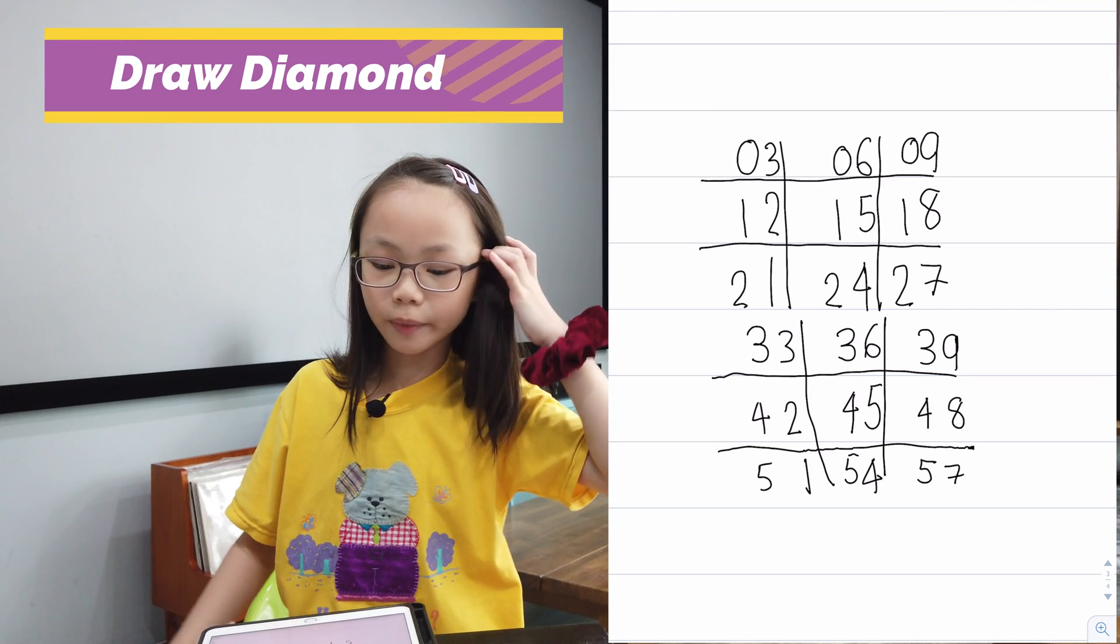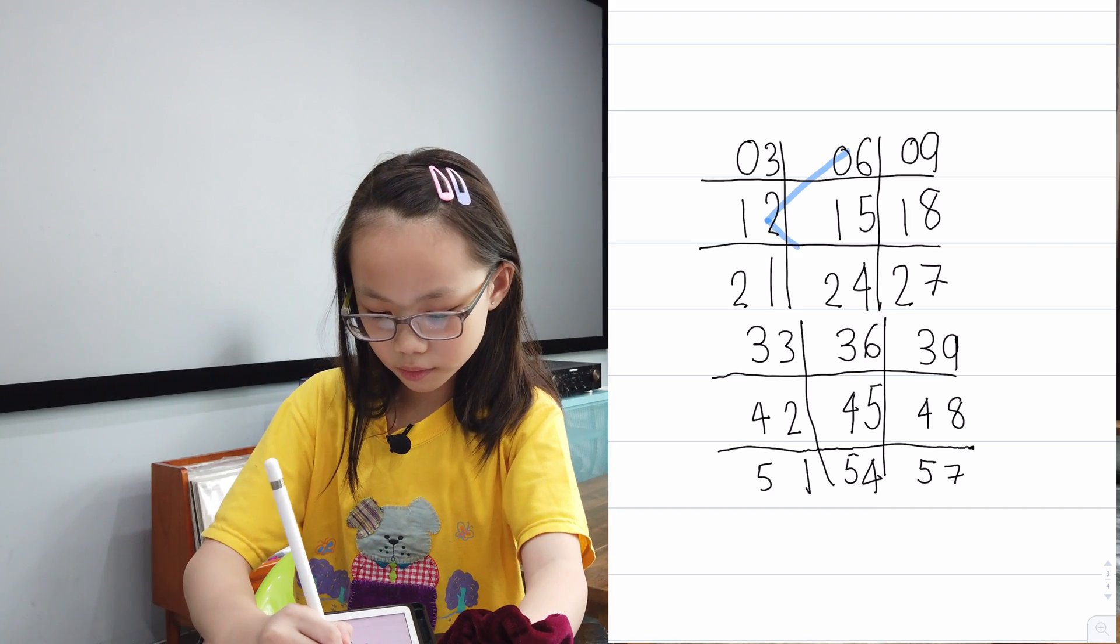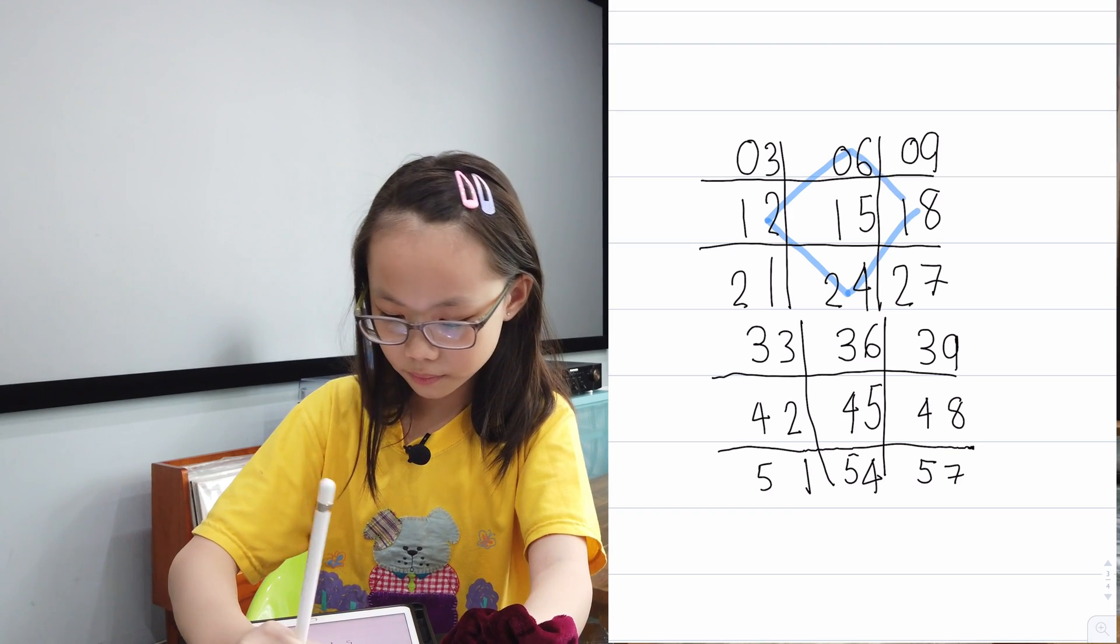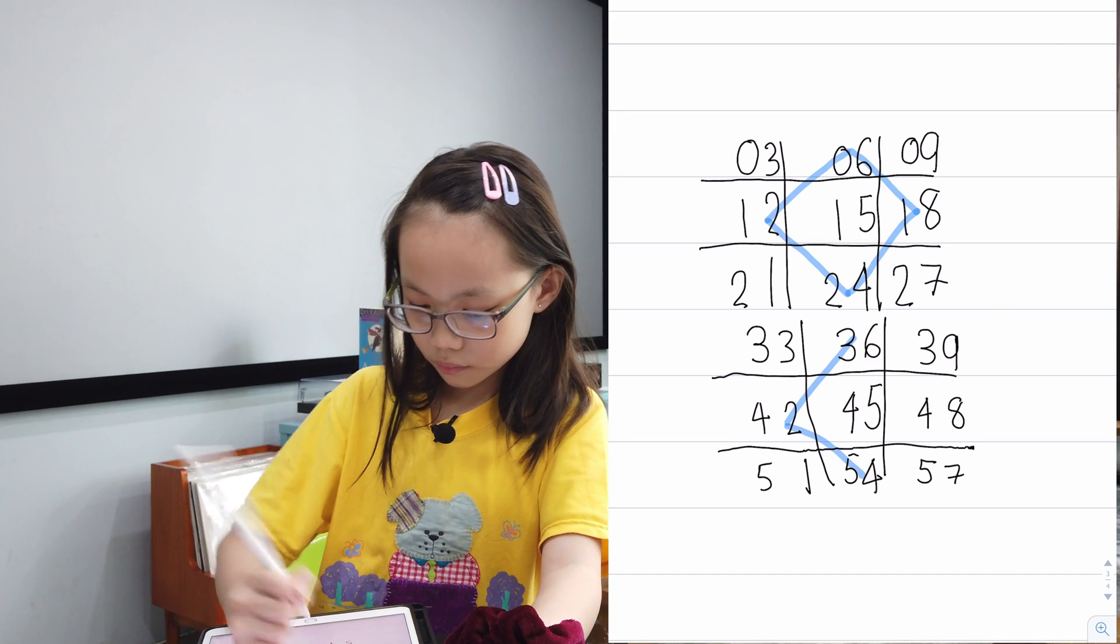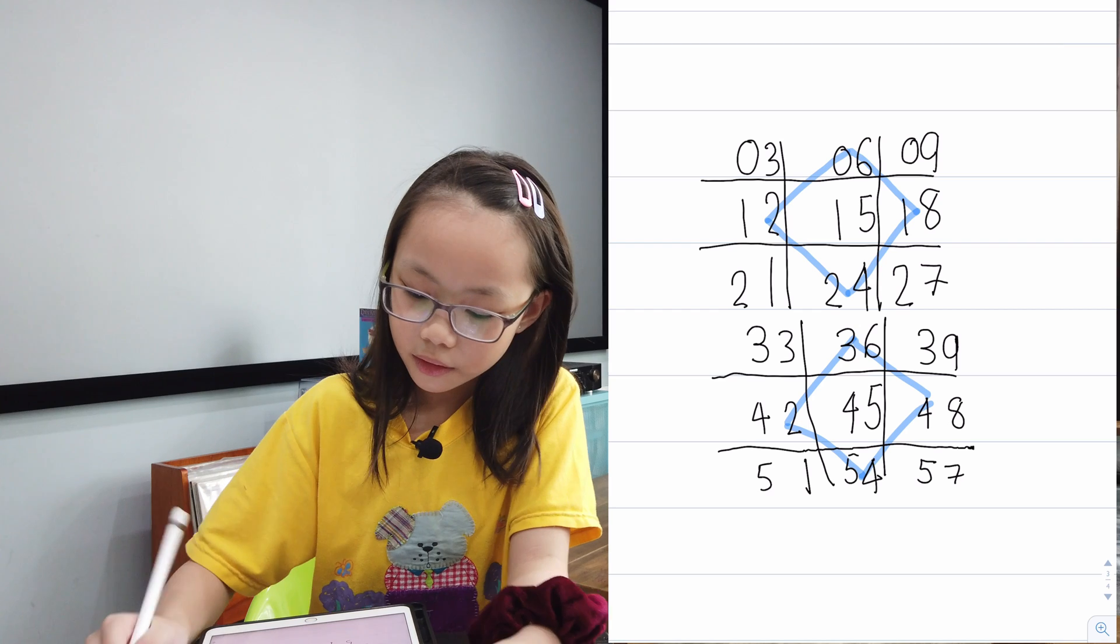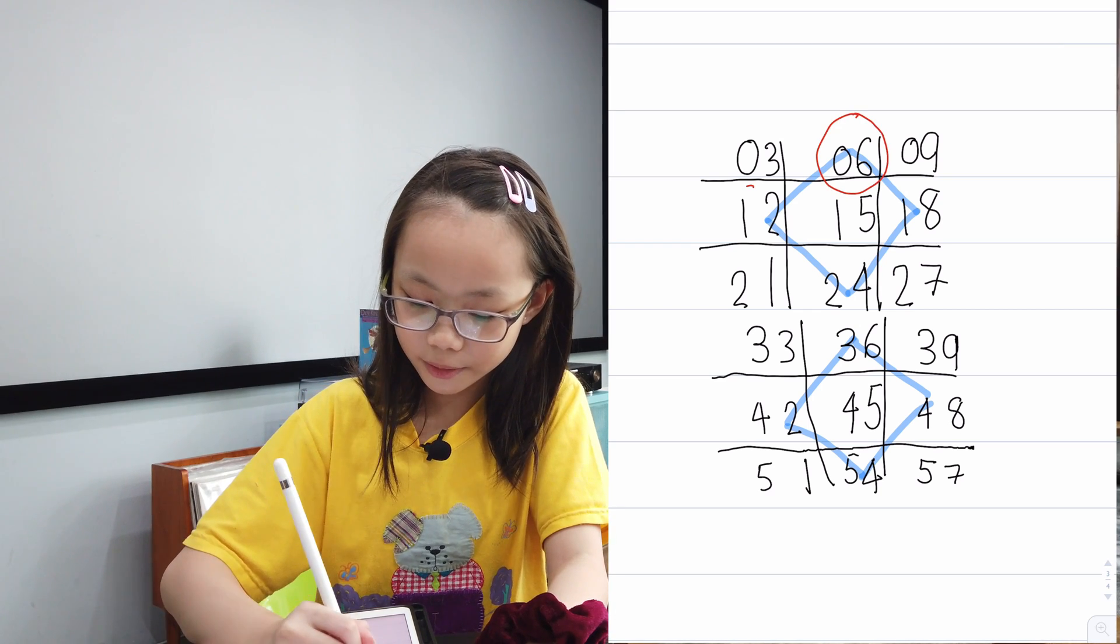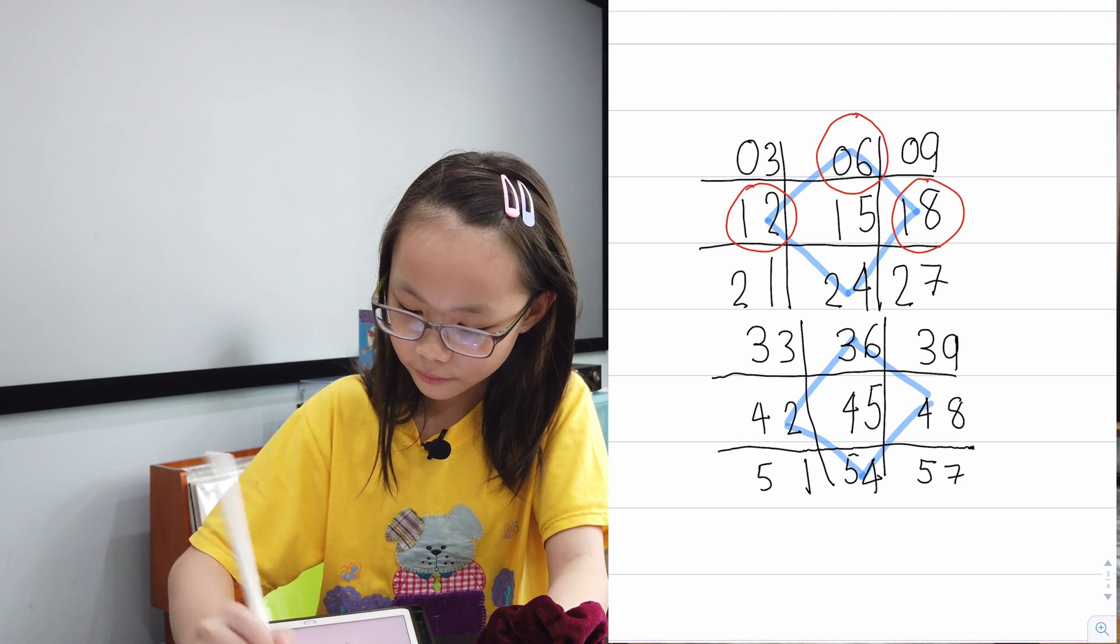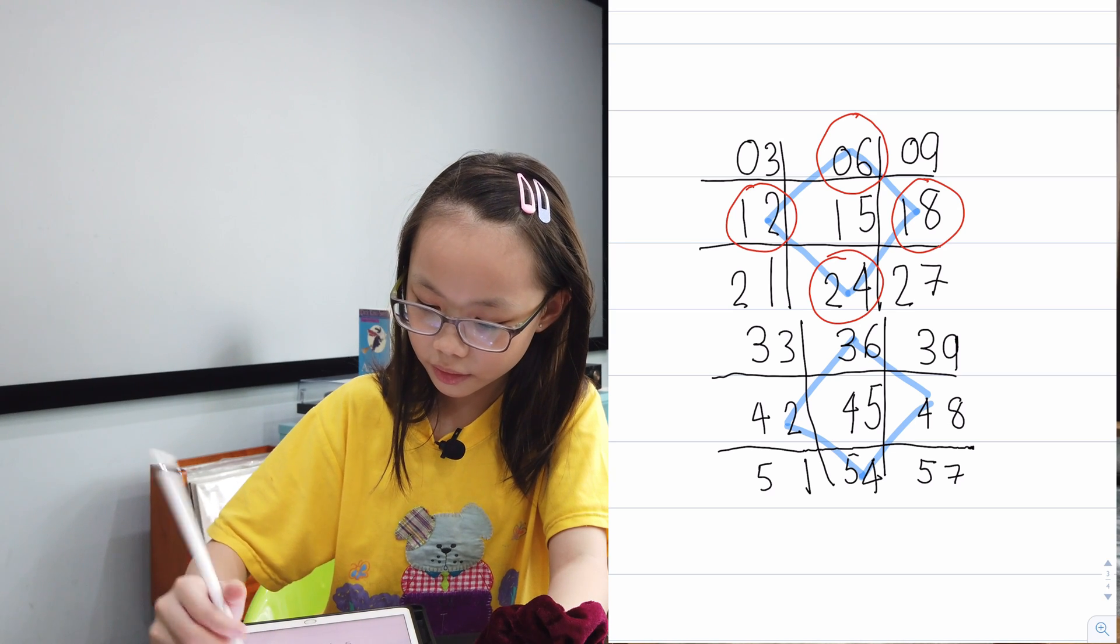We need to write a diamond like this. Now we can check: 1 x 6 is 6, 2 x 6 is 12, 3 x 6 is 18, 4 x 6 is 24, 5 x 6 is 34.